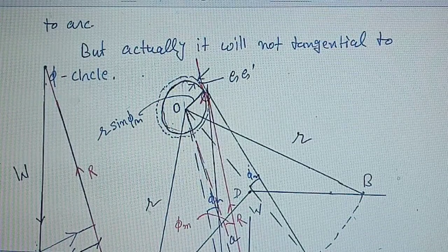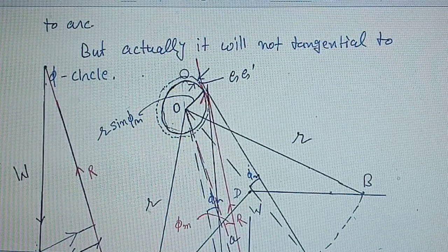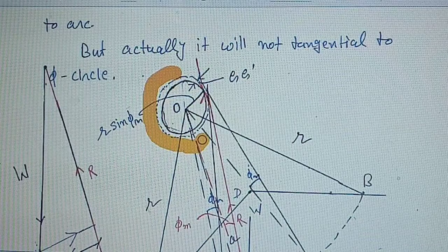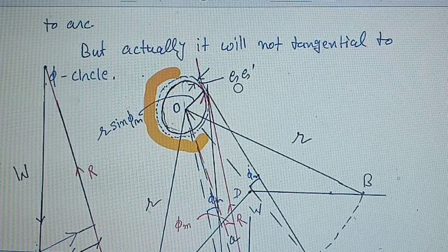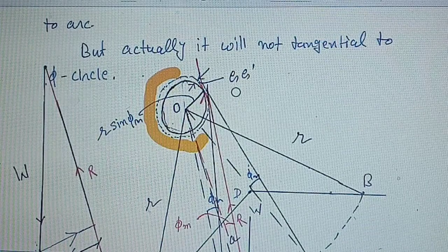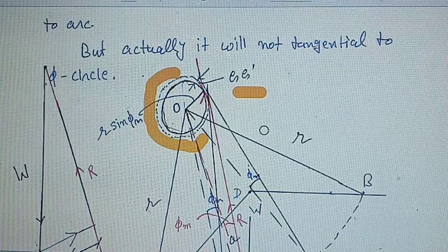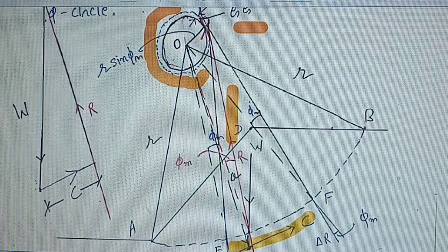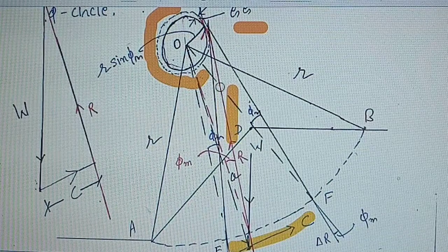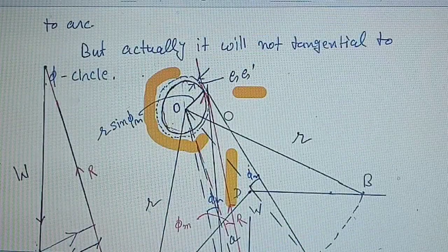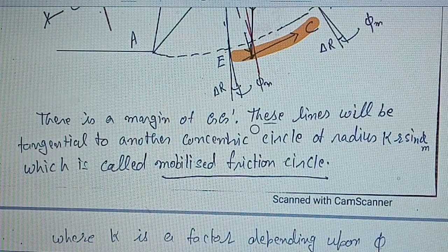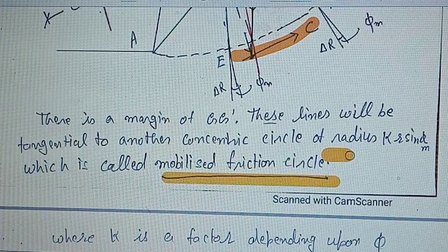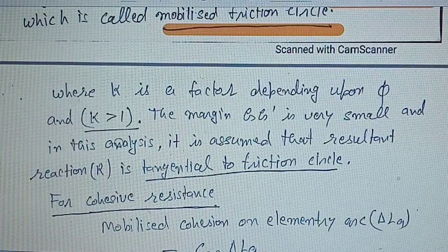Instead, the resultant reaction R is tangential to another concentric circle, as shown by the dotted line in this figure. The margin is g-g'. In this analysis, we ignore this margin g-g' and assume that the reaction R is tangential to the friction circle. By this, we can determine the direction of reaction R. The actual circle has radius k·R·sin(phi_m), where k is greater than 1.